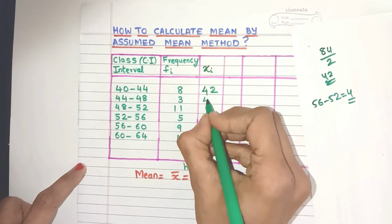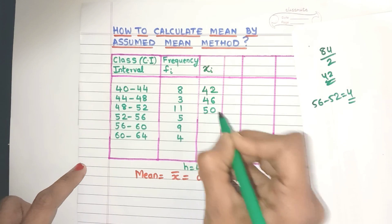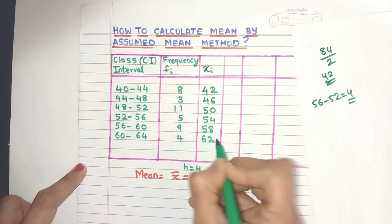Just add 4 to 42, you'll get 46. See, very easily I got the next xi values. That way you can fill up. You'll get all the xi values this way. I hope this is clear friends.